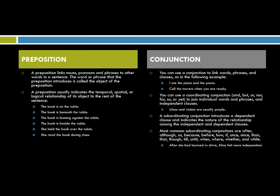Prepositions often have something to do with space or time, and a relationship with objects. For example, 'The book is on the table,' 'beneath,' 'leaning beside,' 'it's over.' Another example: 'She read the book during class.'